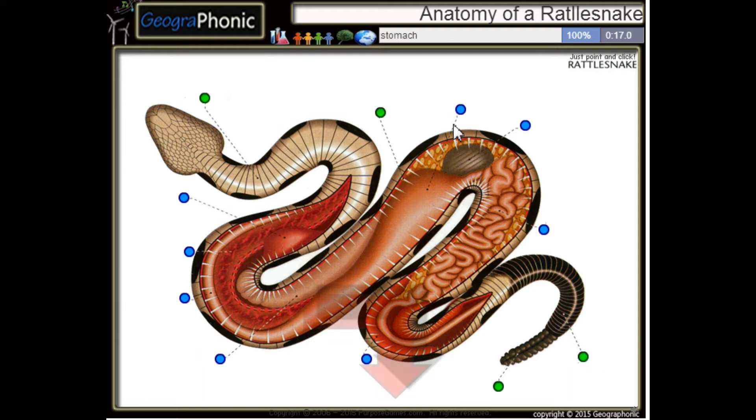This is a rib, a single rib. This is the stomach of the rattlesnake.